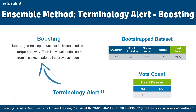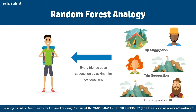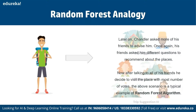Here's a random forest analogy: Chandler is planning a one-year vacation trip and asks his friends for advice. Each friend gives different suggestions — one suggests tracking, another hiking, and so on — by asking Chandler different questions. Later, Chandler compiles all the suggestions and decides to visit the place with the most votes. This scenario is a typical example of the random forest algorithm in action.